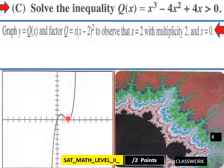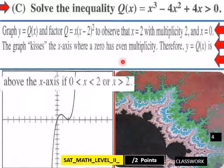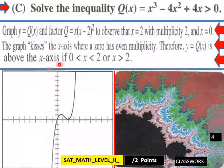It kisses the graph there. And x = 0, which is here. The graph kisses the x-axis where a zero has even multiplicity, which is here. Therefore, y = Q(x) is above the x-axis if 0 < x < 2, so from this whole area here, or x > 2.